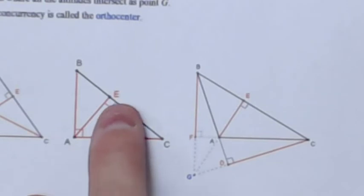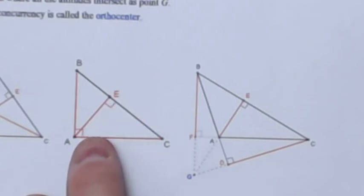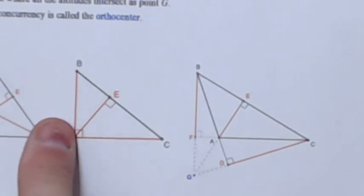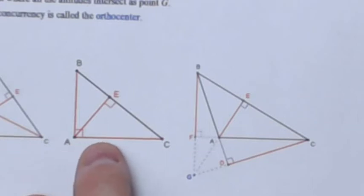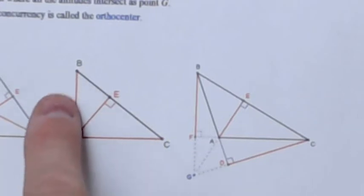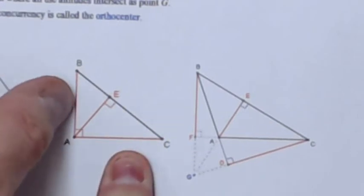This one's a right triangle, so the orthocenter is really point A now, and this is an altitude. The sides, the legs of this right triangle are really altitudes.